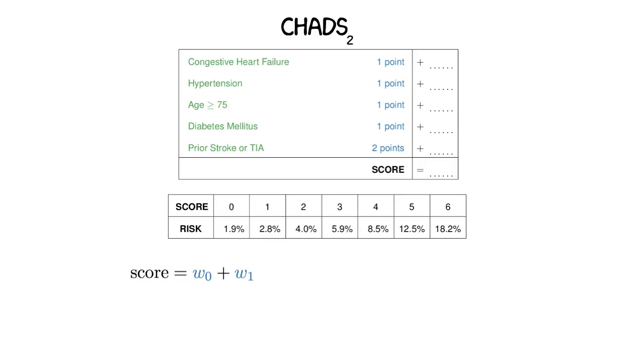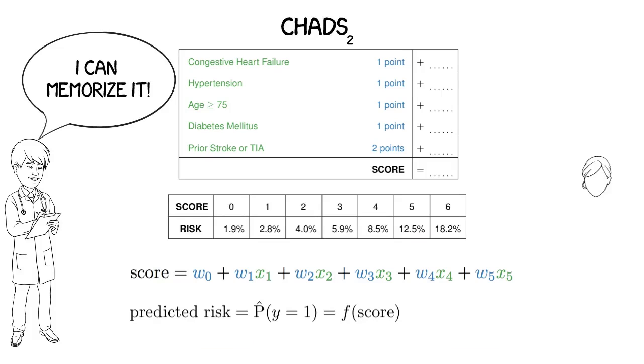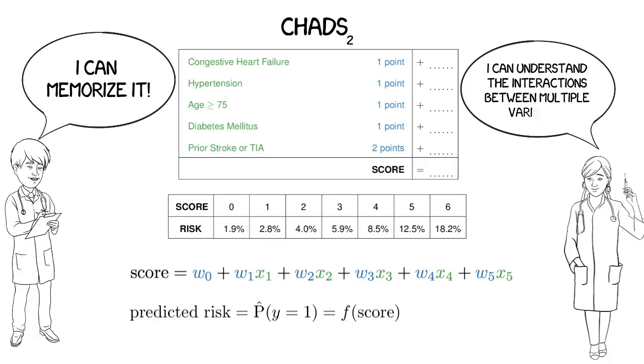Risk scores are just linear classification models, but they've been deployed over the past century because sparsity and small integer coefficients make them easy to use and easy to understand.